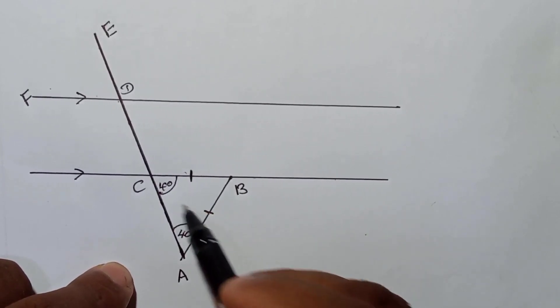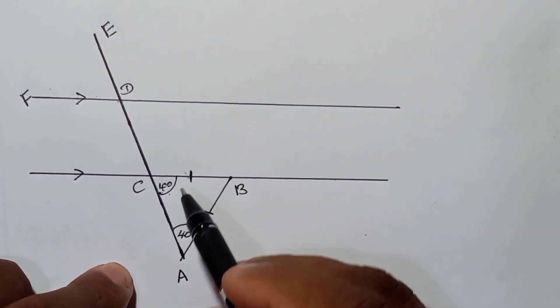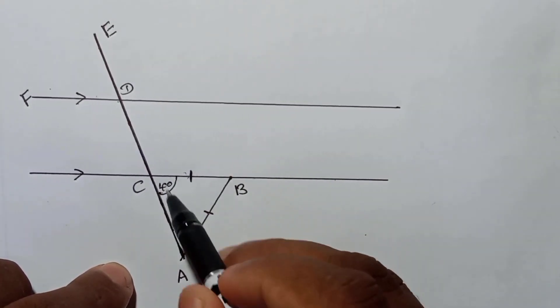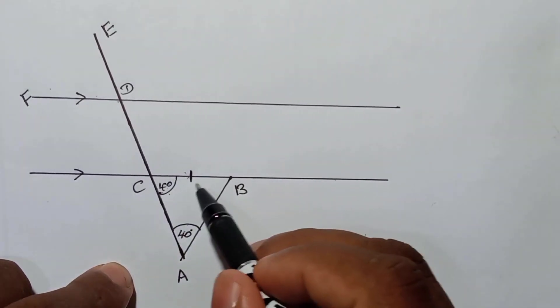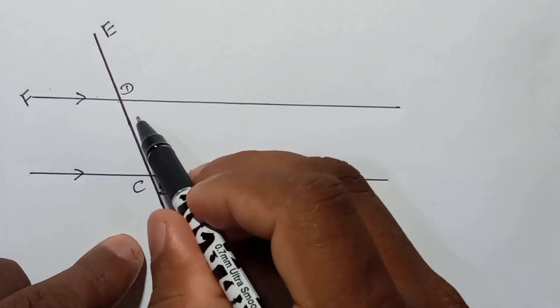So that's why here should be 40. If this is 40, this is opposite to this one, this is opposite to this one in this isosceles triangle. So if this is 40, this is also 40 in this part.